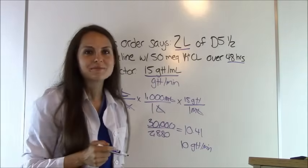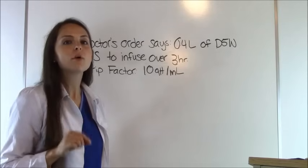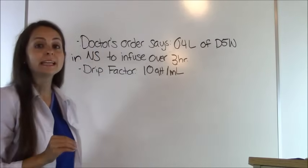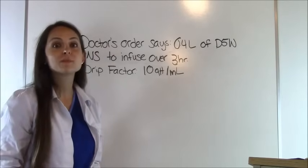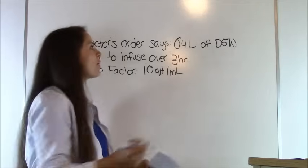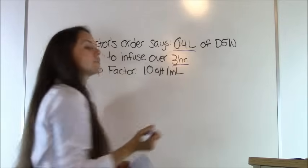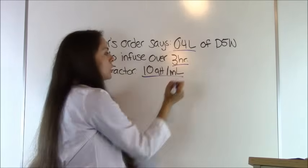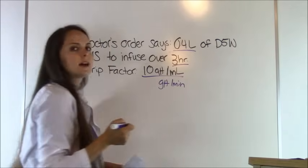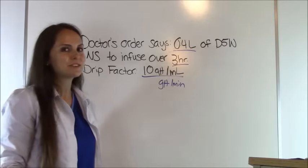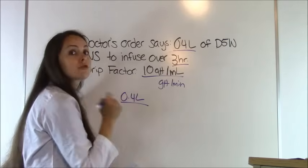Let's do our last problem. Doctor's order says infuse 0.4 liters of D5W normal saline over 3 hours with a drip factor of 10 drops per milliliter. The important parts: 0.4 liters, over 3 hours, drip factor 10 drops per milliliter. We're trying to find drops per minute. Starting with what the doctor ordered: 0.4 liters over 3 hours.